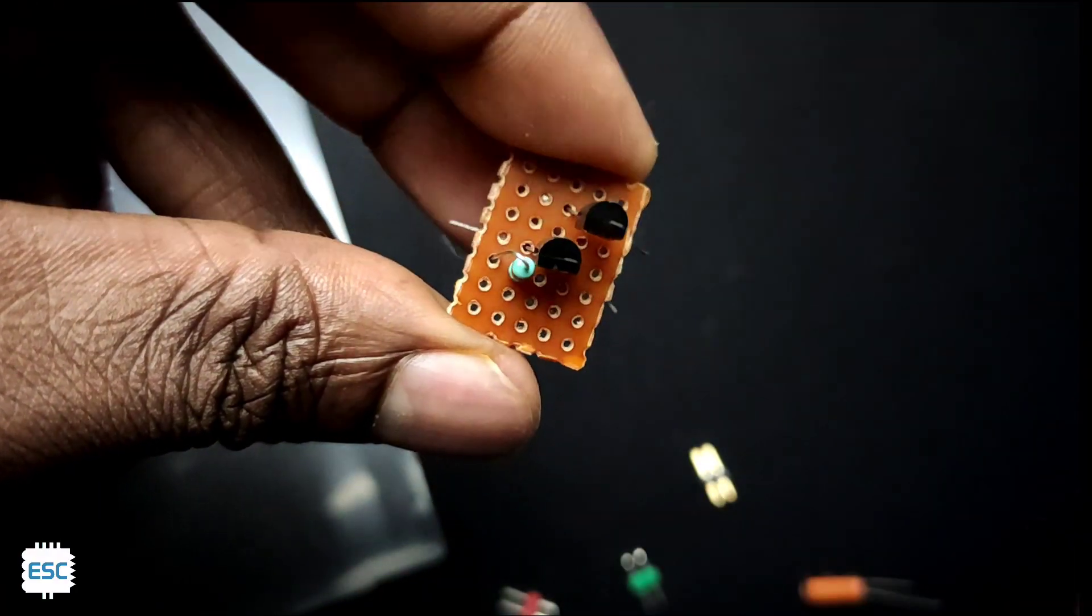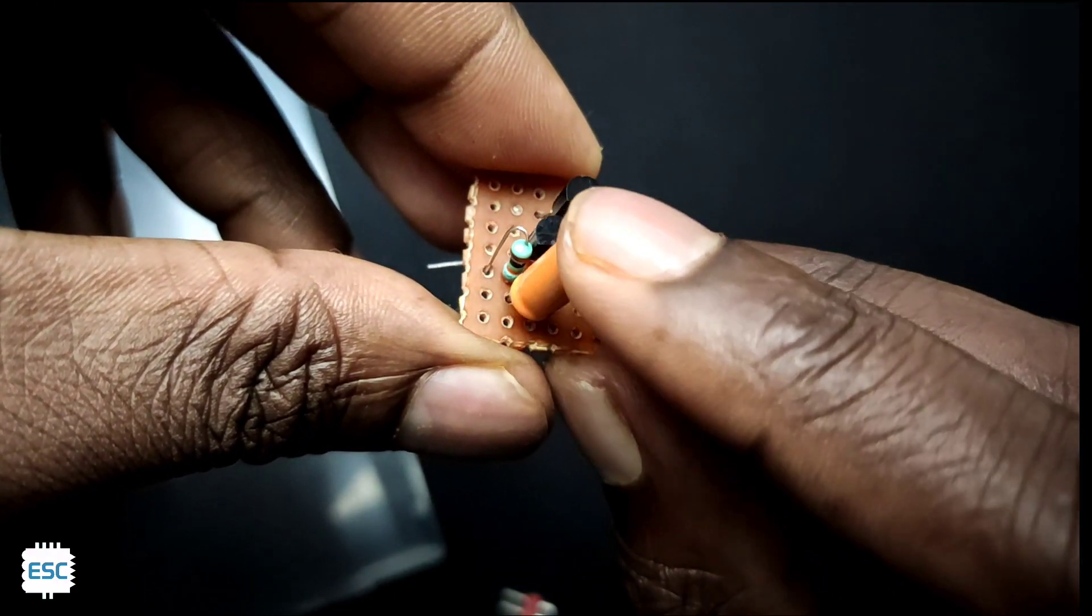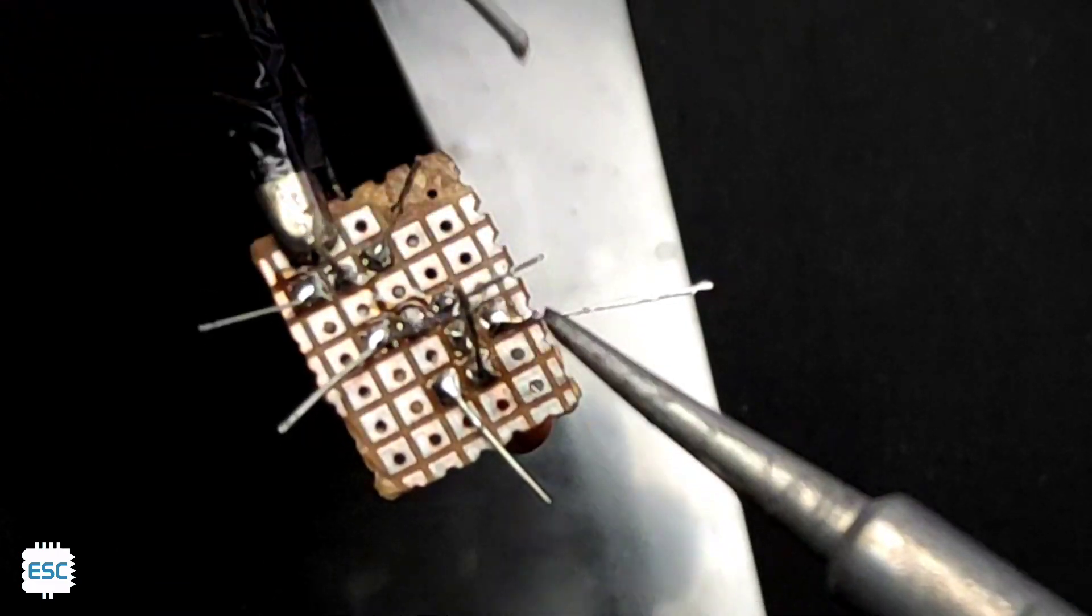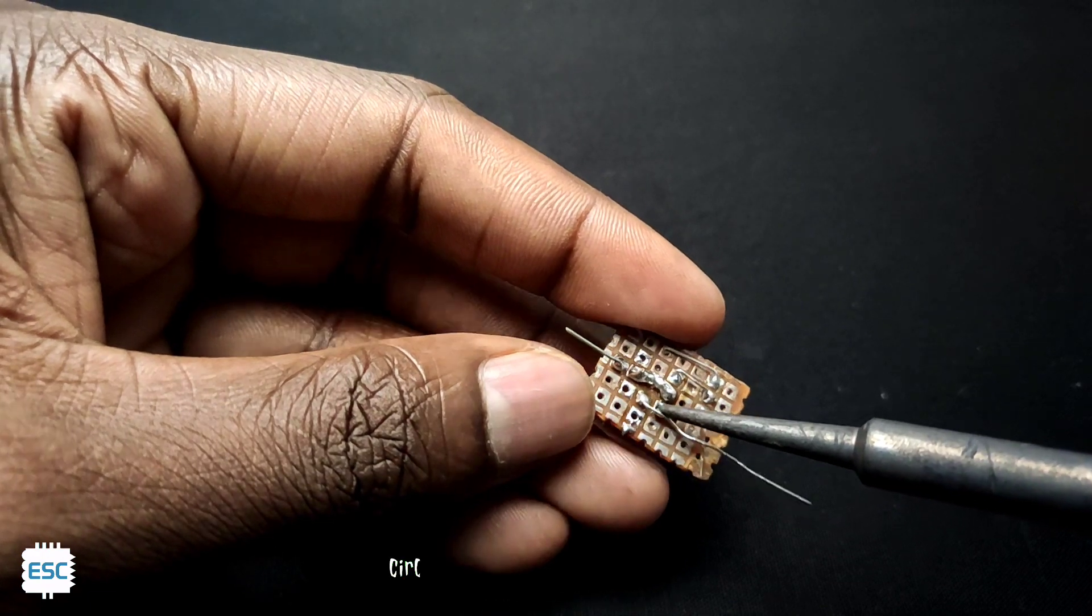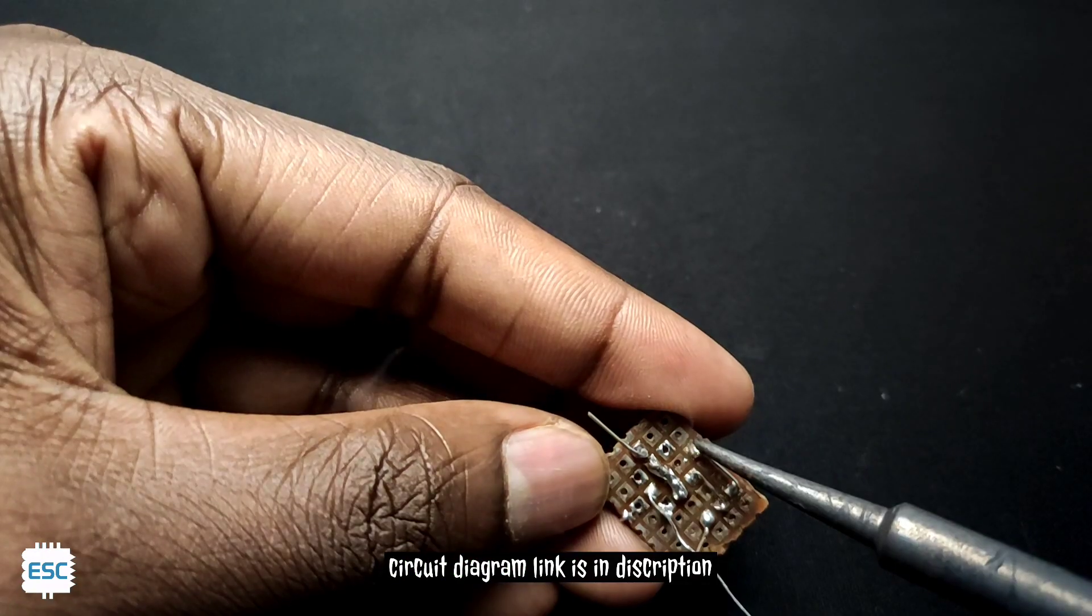Next I placed the resistor and capacitor and soldered. After that I connected all components according to the schematics. You can also download the circuit diagram from the link given in the description.